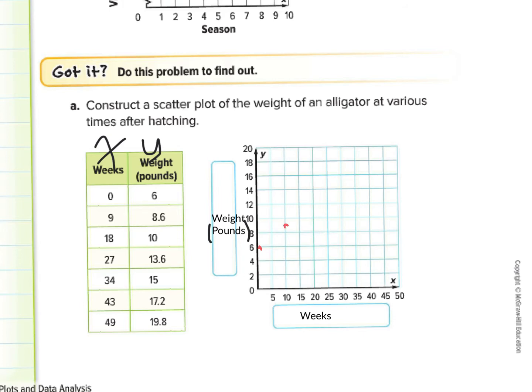So let's plot these. And you can see that we're going to start with 0 and 6. So the alligator immediately starts at 6 pounds. I'm going to go ahead and plot these as we go. 9 is 8.6. 18 is 10. 27 is 13.6. 34 is 15. 43 is 17.2. And 49 is 19.8. And you can see here that we have a trend, not a direct line. It is not a direct variation by any means. But we do have a positive association.